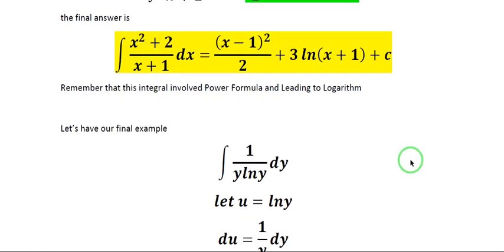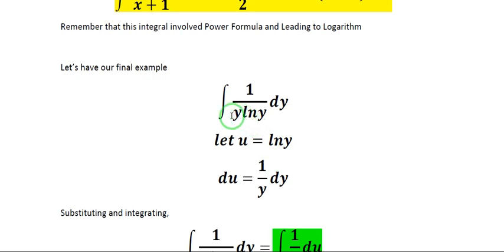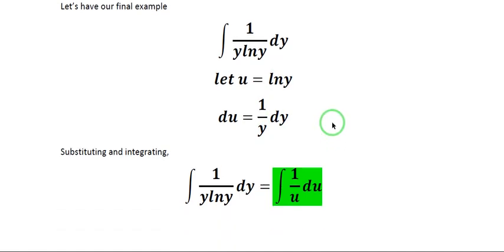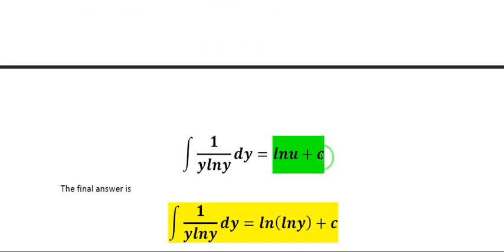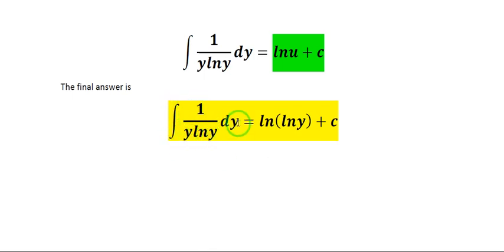For our third example, we have the integral of 1 over y ln of y dy. This is tricky. If you try letting y as your u, then du equals dy, but that leaves ln of y unresolved. Instead, let ln of y as our u. The differential of ln of y gives 1 over y dy, which is exactly the remaining factor. So substituting, the integral of 1 over y ln of y dy becomes the integral of 1 over u du, which equals ln of u plus c. Since u is ln of y, the final answer is ln of ln of y, plus c.